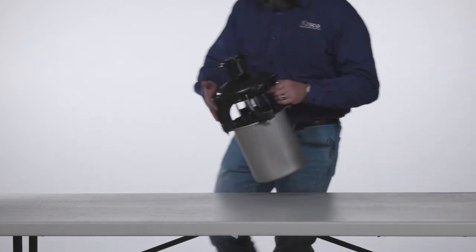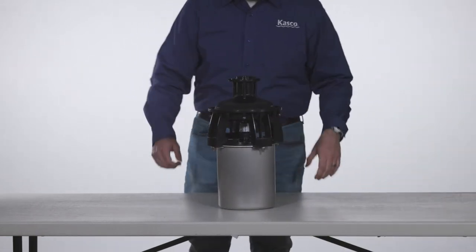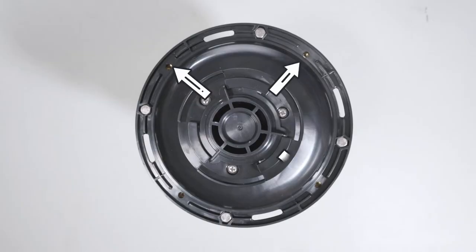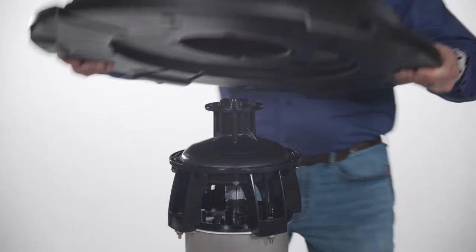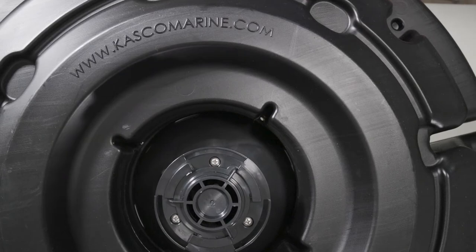Let's get started. Place your Casco J-series fountain on a table or safe work area with plenty of space. Take note of the four bolt hole patterns as shown here. Then take your float and set it on top of the fountain. Ensure the power cord cutout on the float is aligned with the power cord while lining up the four bolt holes on top.